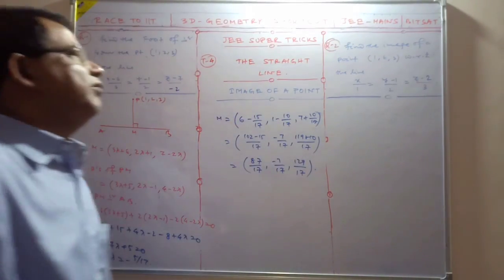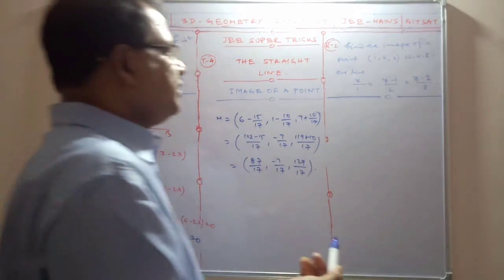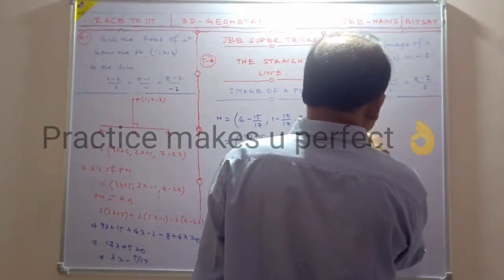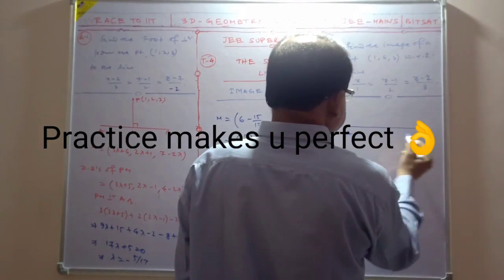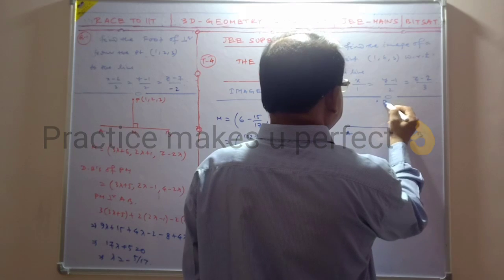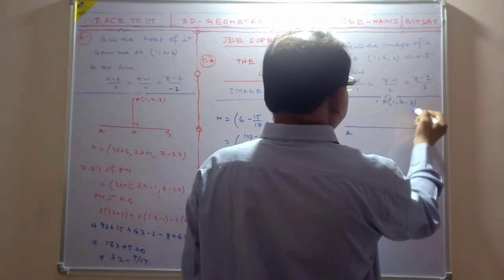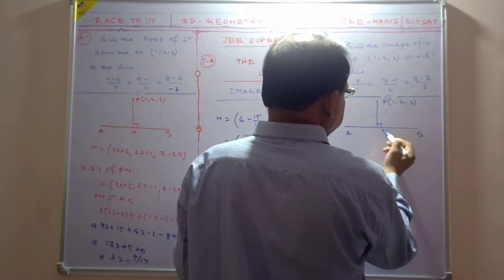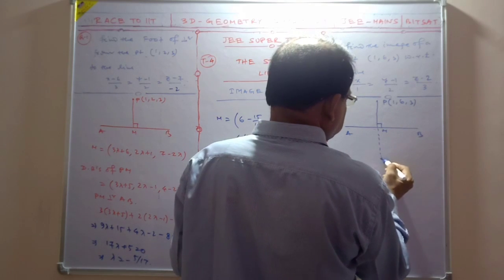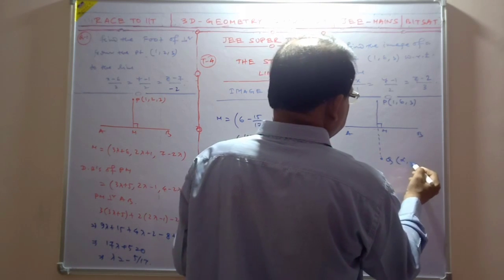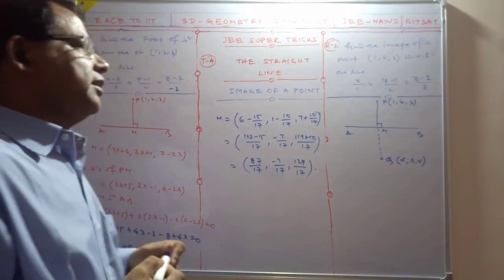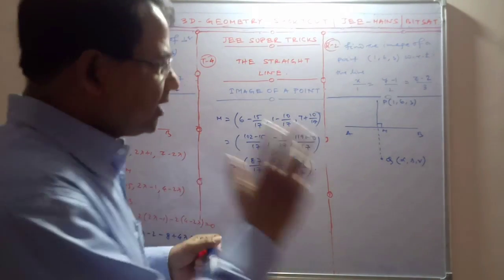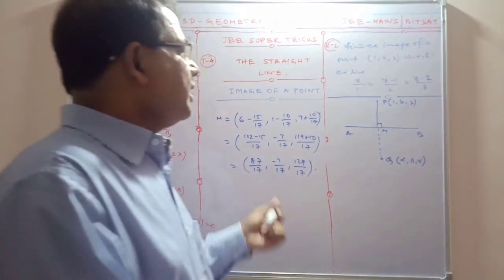Now next we will find the image of the point. This is AB, this is point P, and we need to find point Q which is the image. We need to find the coordinates alpha, beta, gamma. First it is the foot of perpendicular, so we find M point coordinate.